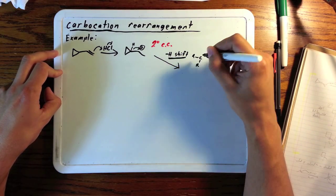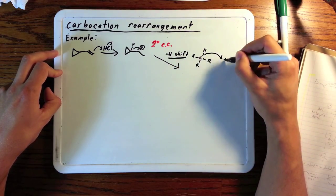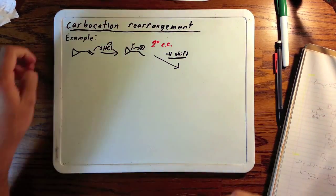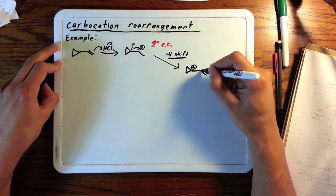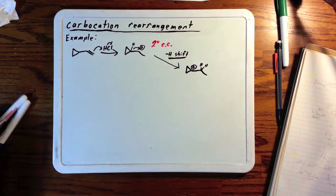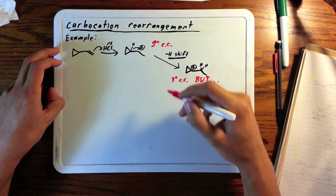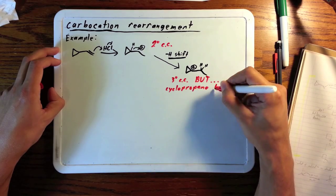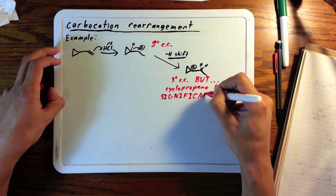They look very basically like this where a carbon-hydrogen bond is broken and the hydrogen goes with the electrons to the carbocation. Well, there's our tertiary carbocation, but cyclopropane is already a very strained molecule.